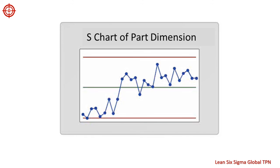What about this S chart? This chart shows a sudden shift in standard deviation. There is an unusual source of variation in this process — perhaps a different parameter was put in place at group 10. We need to look more closely at the process to find out where this shift comes from.